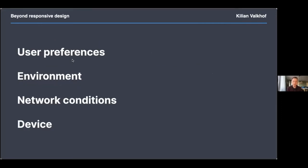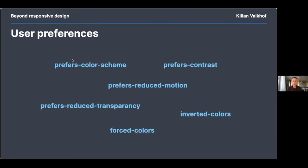Looking at what our websites can respond to, I think there are four categories: user preferences, their environment, their network conditions, and their device. Today we'll go over what is possible in each of these categories, and for each feature I'll share which browsers already support it. Not everything will be equally well supported.